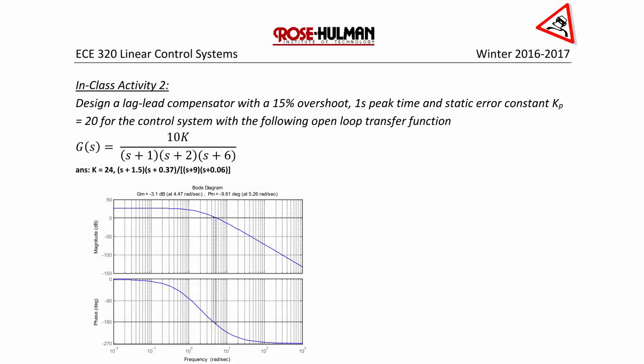In class activity two, design a lag-lead compensator with a 15% overshoot, one second peak time, and a static error constant kp equal to 20 for the control system with the following open loop transfer function: G(s) is equal to 10k over (s+1)(s+2)(s+6).